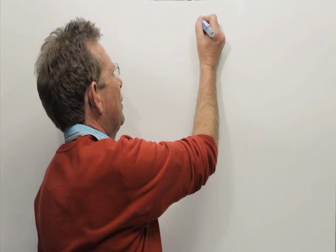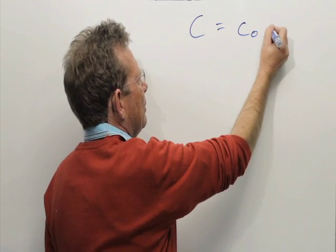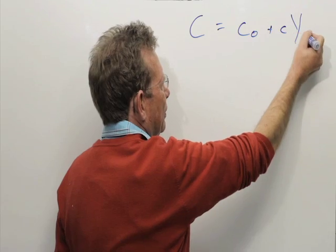Consumption spending consists of two components. C equals autonomous consumption plus an induced part of consumption.